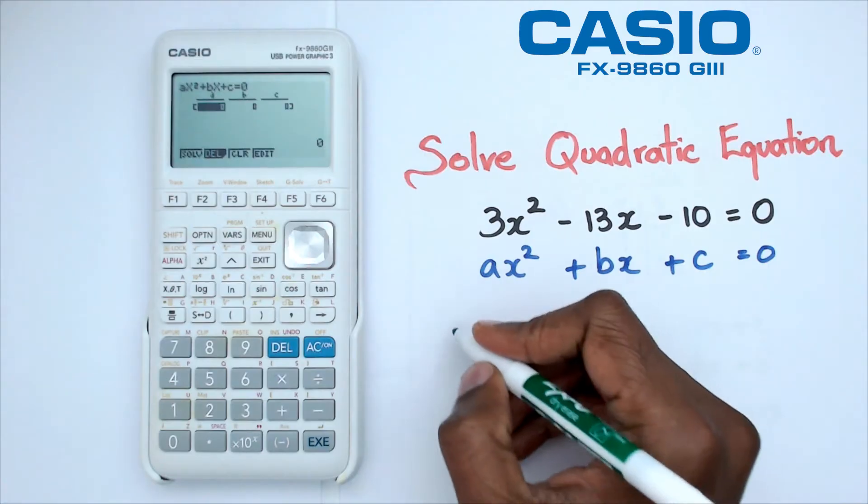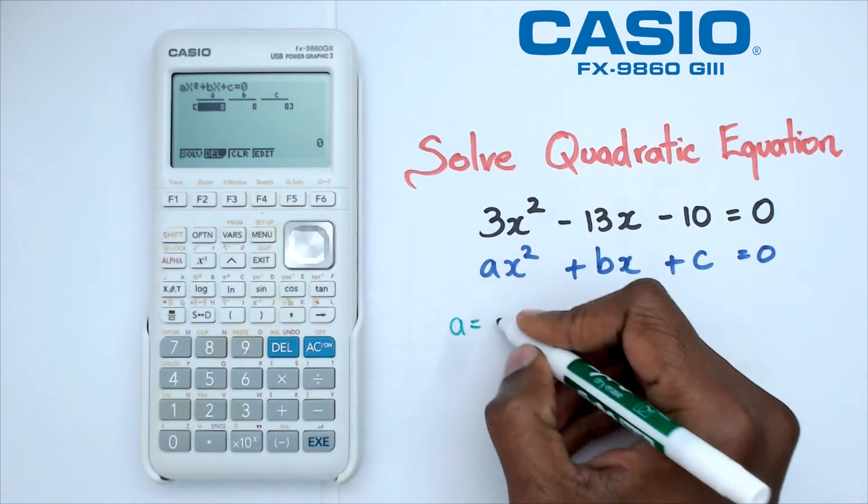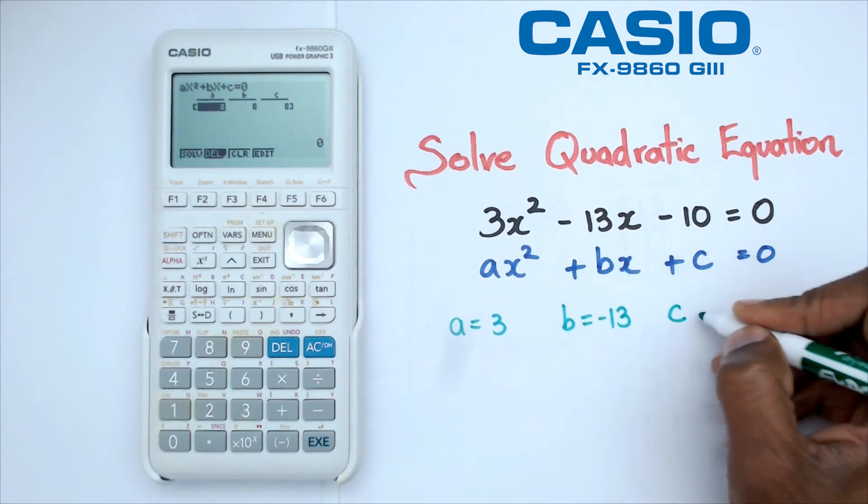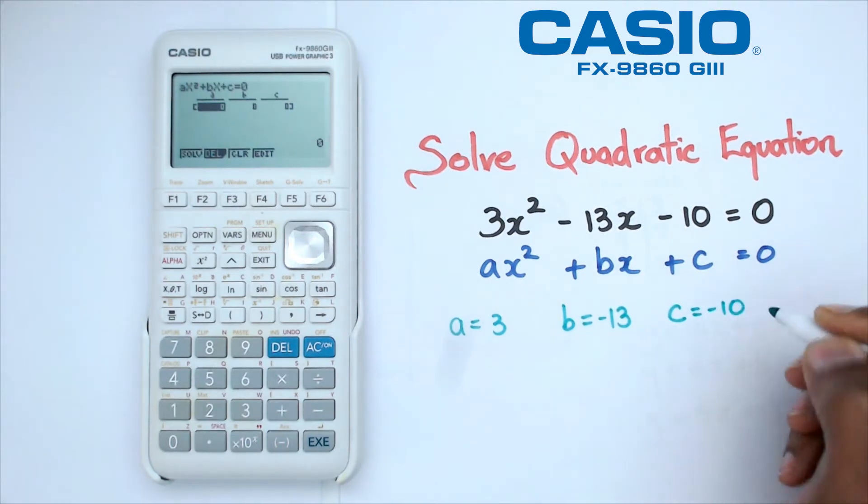What it means is that we've actually got a is equal to 3, b is equal to minus 13, and c is equal to minus 10.